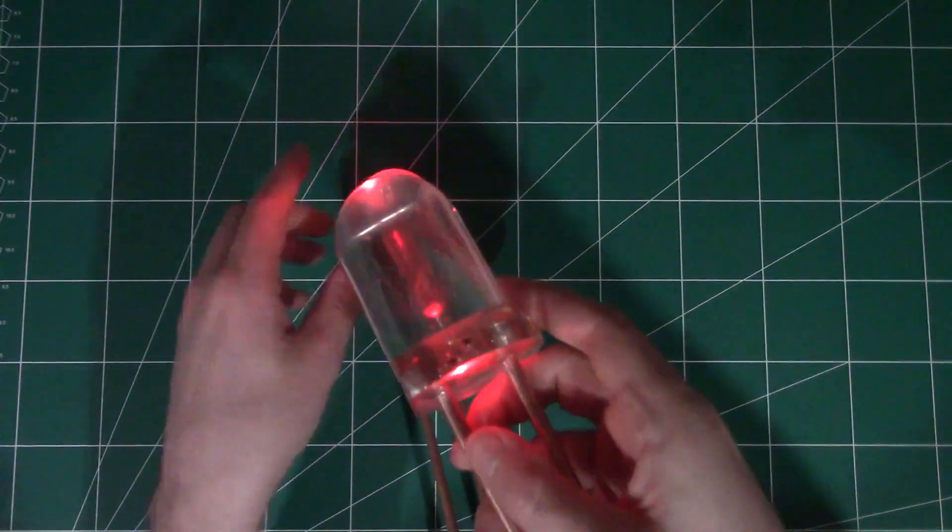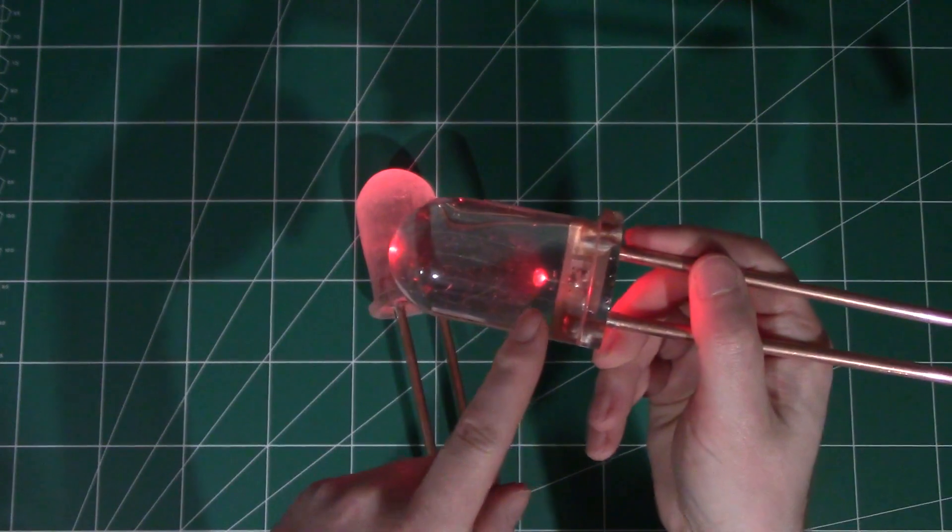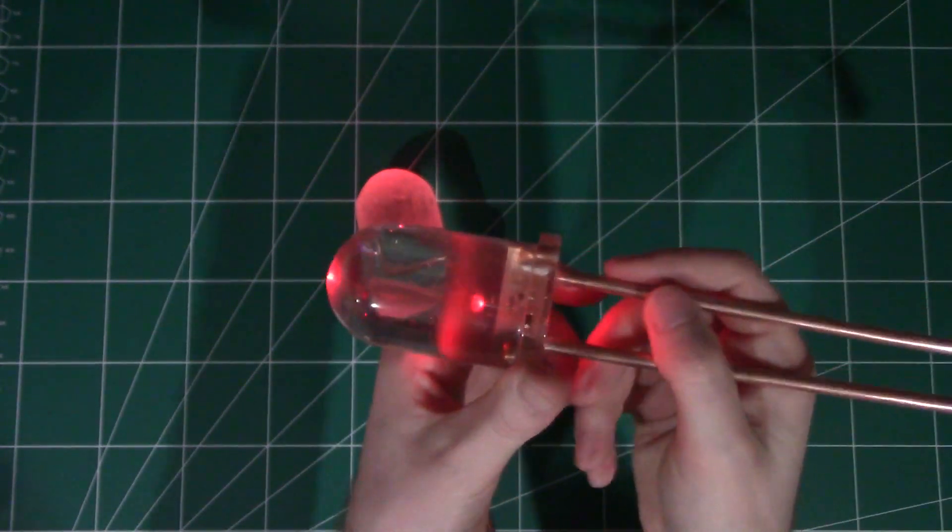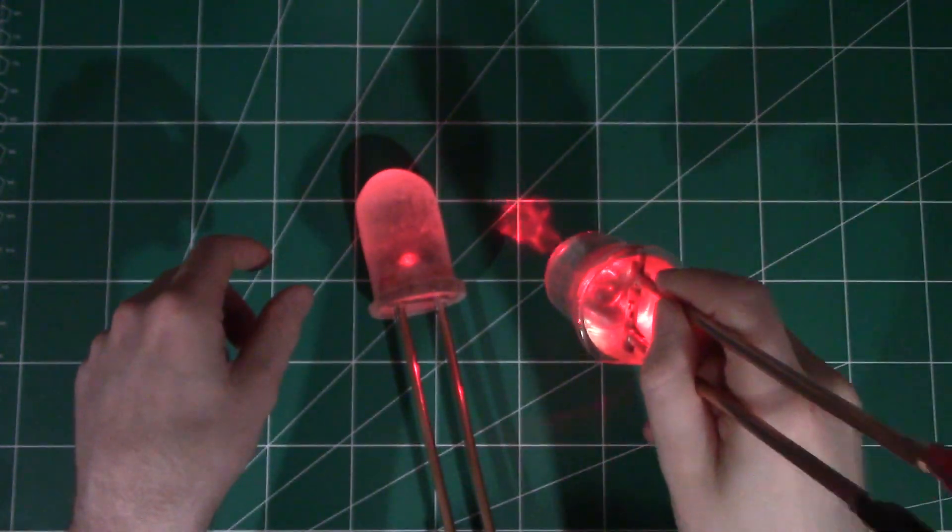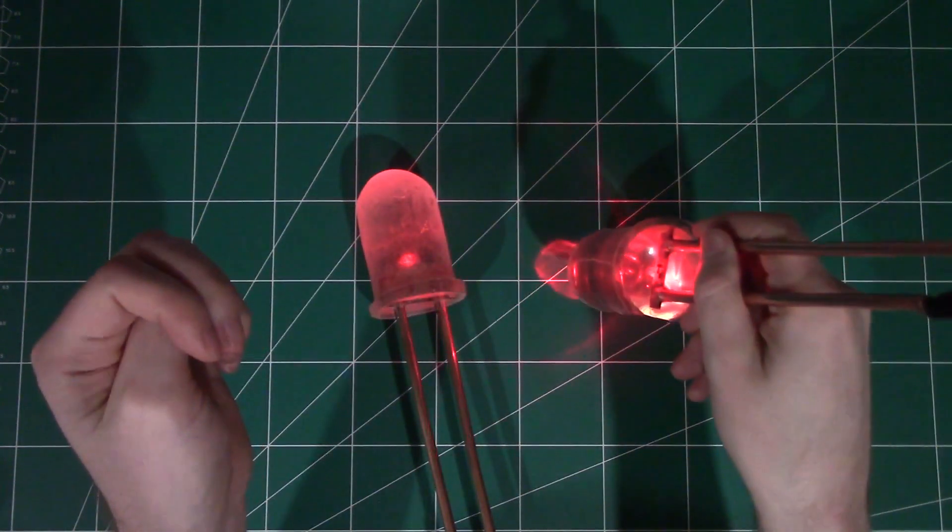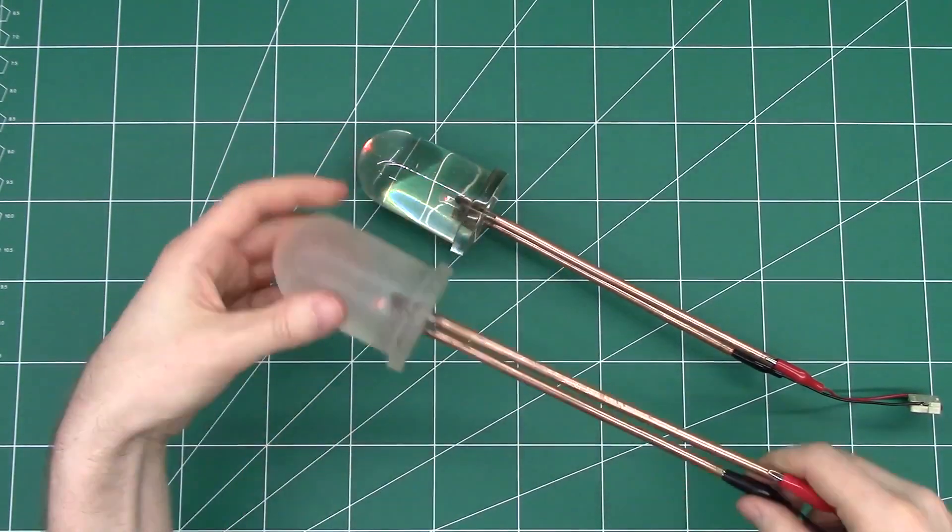I think it's a bit easier to see on the clear one. So you can see there's a kind of a cone of light. But the curved top actually has a bit of a magnifying effect.